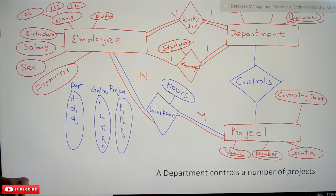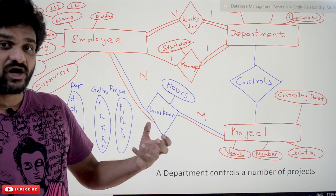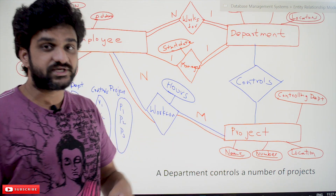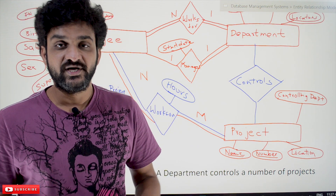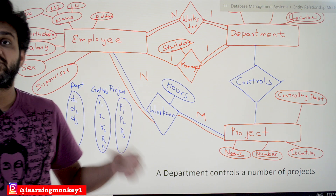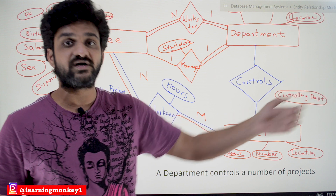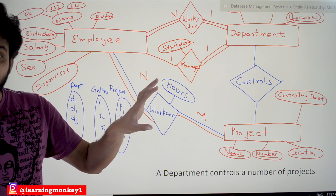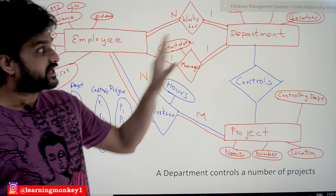Before that, just think about how departments work. Is it mandatory that every department controls a project? For example, if you take a women's grievance department or an employees' grievance department, there is no need for those departments to control projects — they just oversee facilities for employees. So there are some departments which do not control projects.